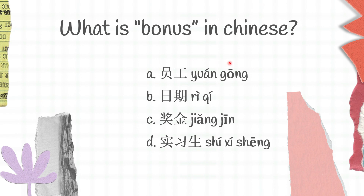Yuang gung is staff, re qi is date, jiang jin is bonus, shi xixi sheng is intern. And the correct answer for this question is c, jiang jin.